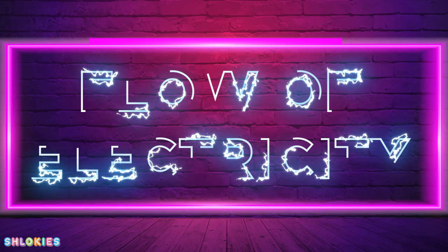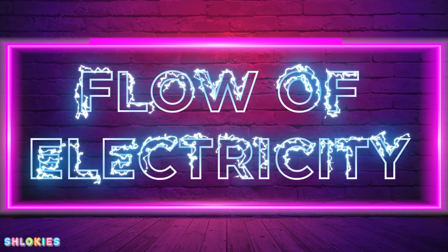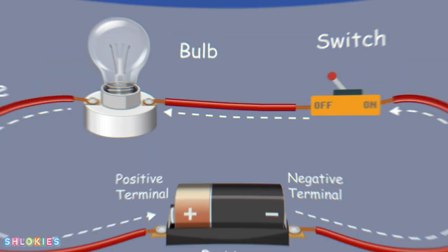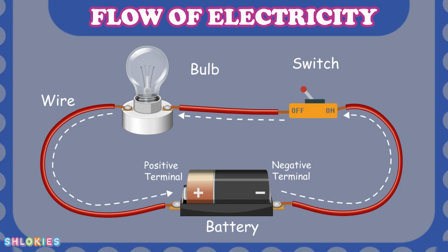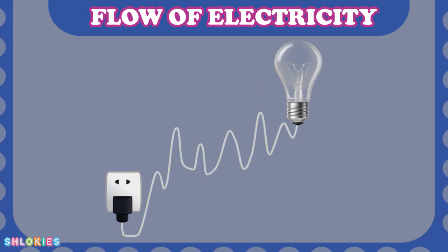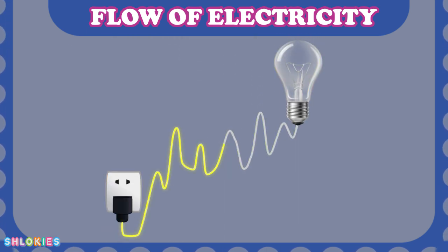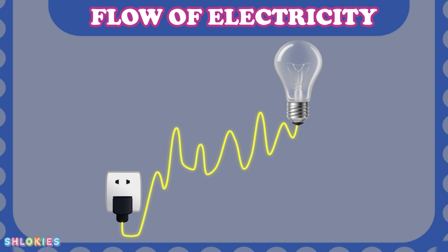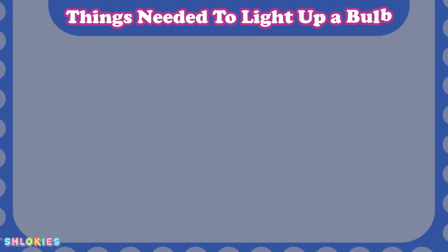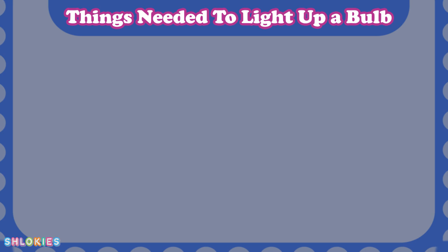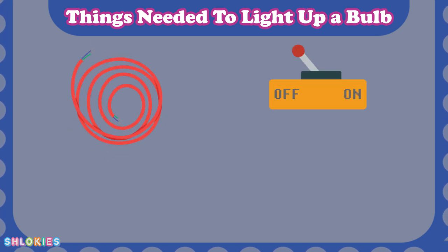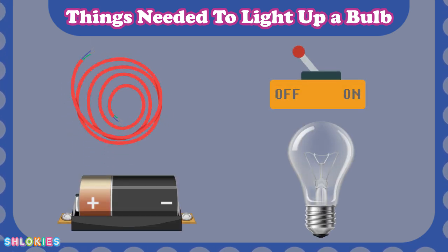Hello friends! Let's learn flow of electricity. We'll learn this with simple experiment. Electricity is needed to light up a bulb. Things we needed to light up a bulb is wire, switch, battery, bulb.